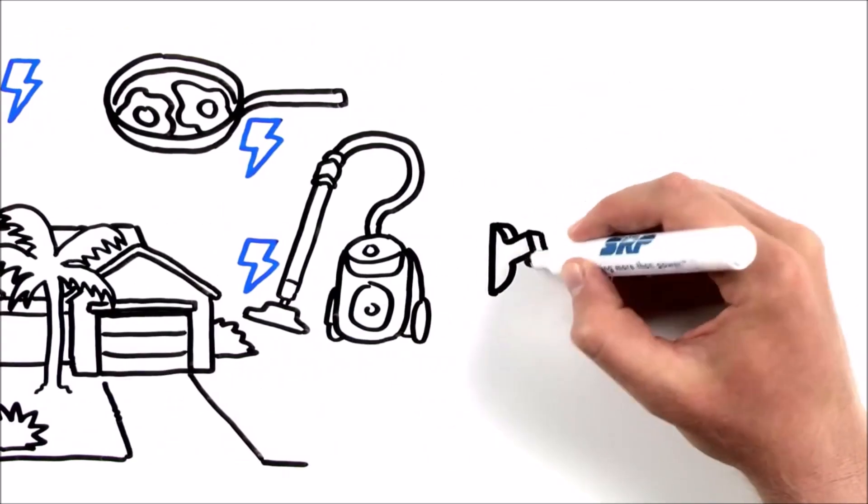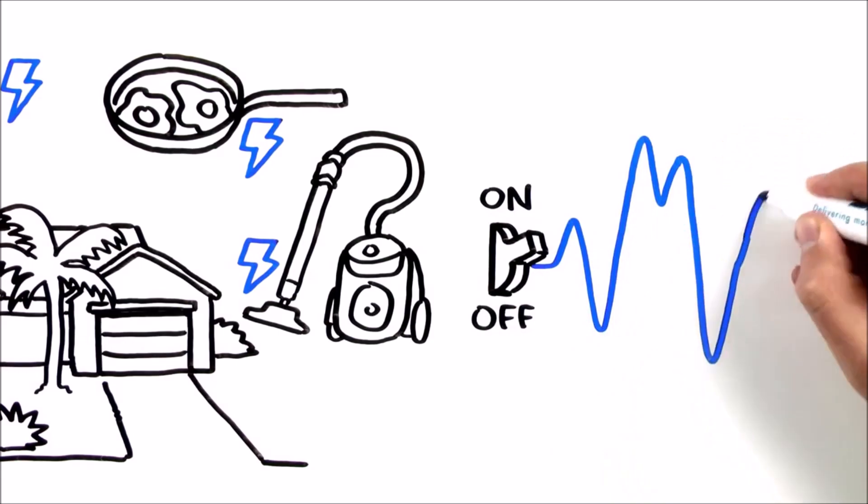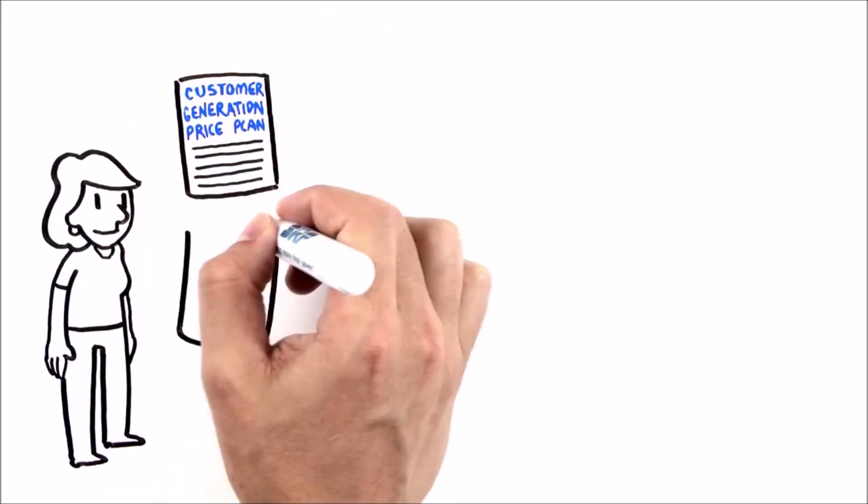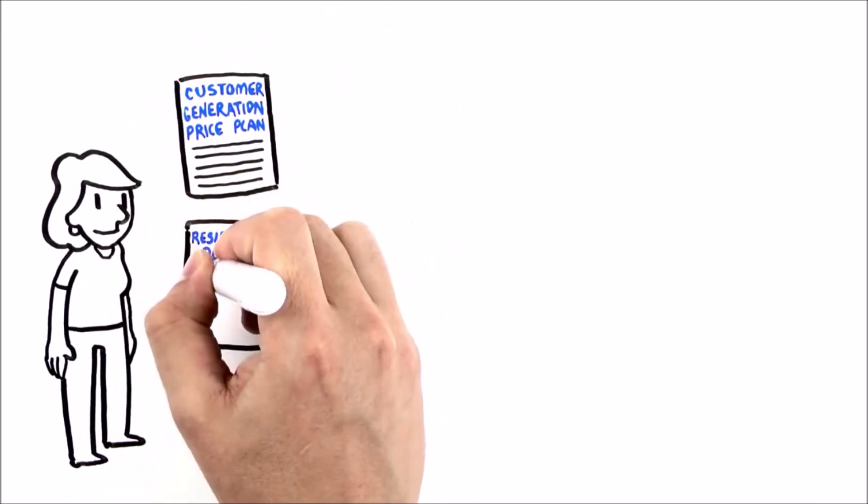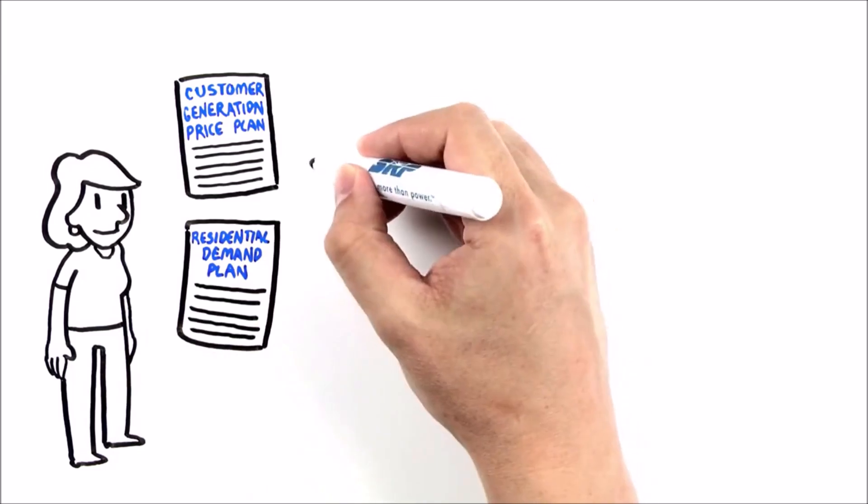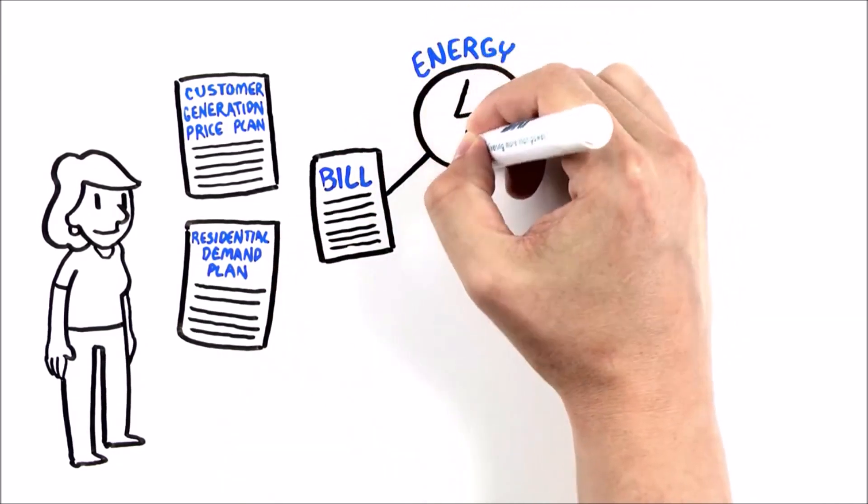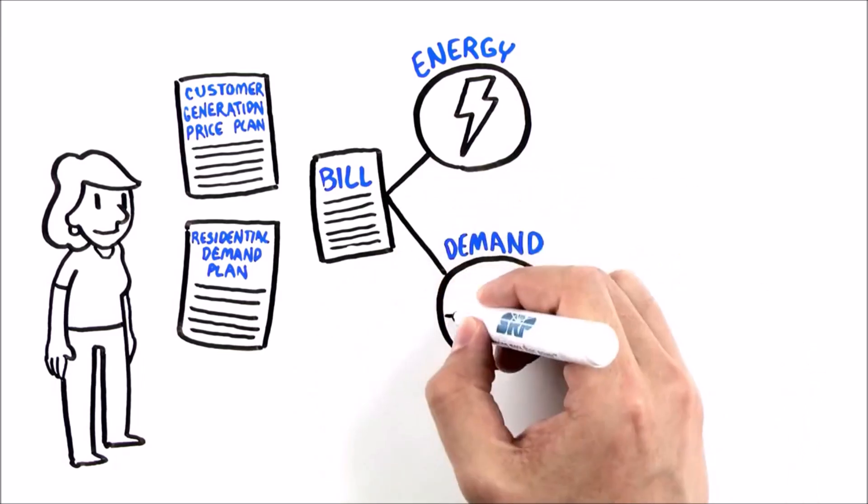Each time they turn on and off, they create peaks and valleys in energy demand. For solar customers on SRP's Customer Generation Price Plan or those taking advantage of our new Residential Demand Plan, most of your bill is based on two things you can control – the energy you buy from SRP and your peak demand.